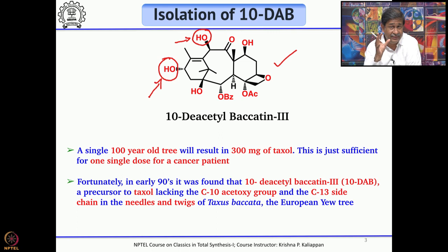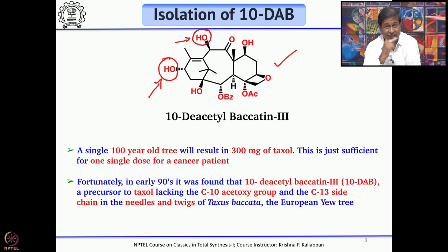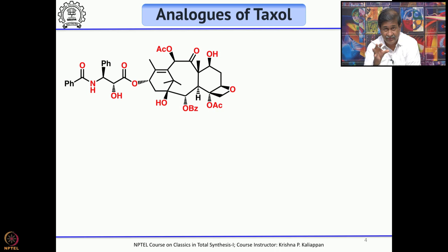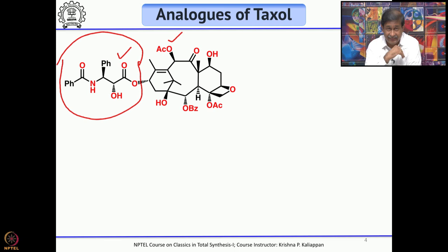Considering the complexity of the natural product, it was always a big challenge for synthetic chemists across the globe to think about a good synthesis for this interesting molecule. About 200 groups worked on it, and people were also interested in making analogues of Taxol — since with 10-deacetylbaccatin III as the core structure, not only can one attach the original side chain and acetate, but also introduce different side chains.